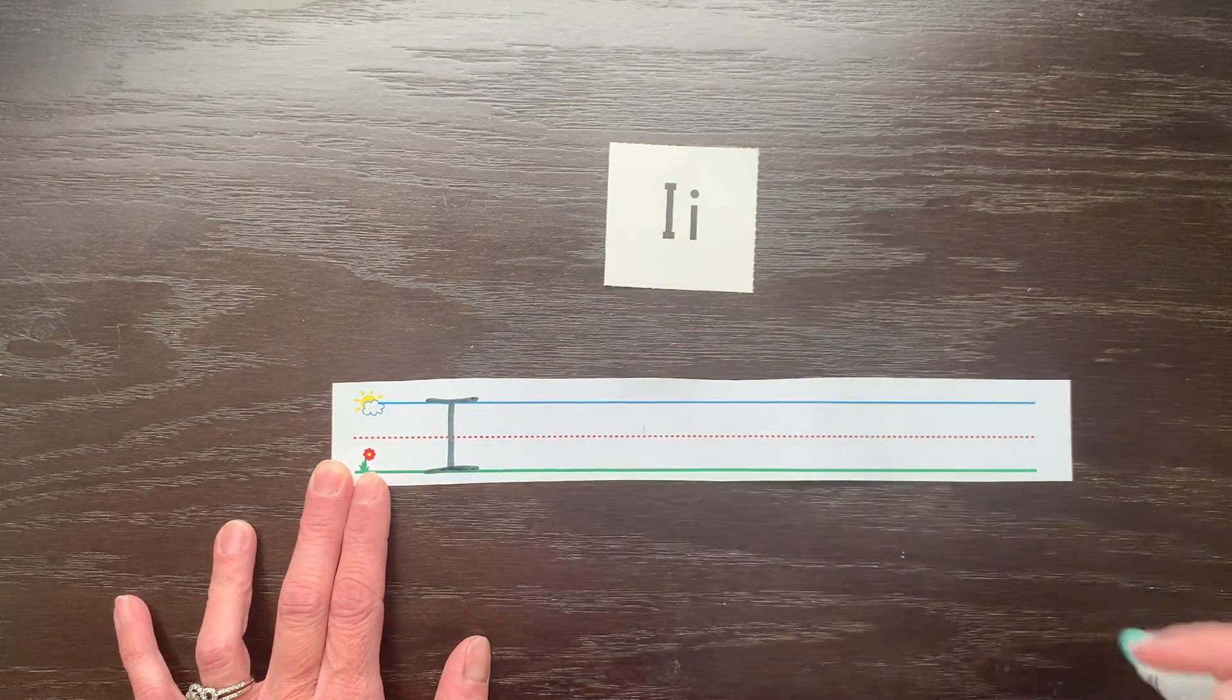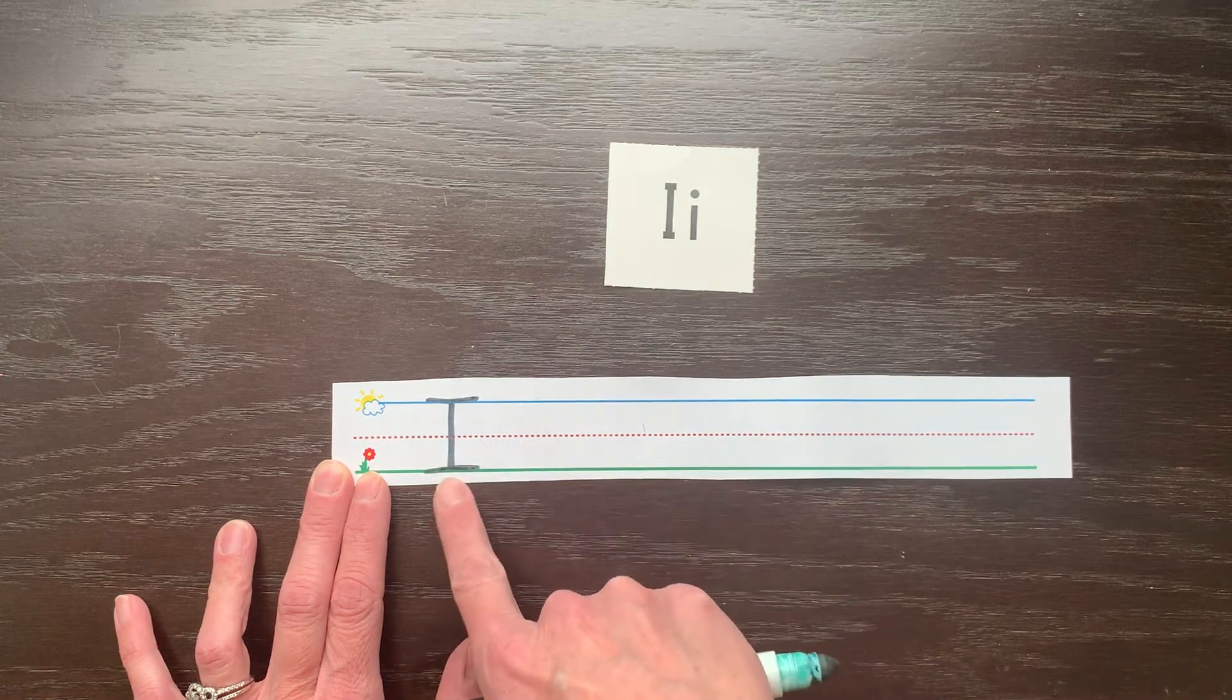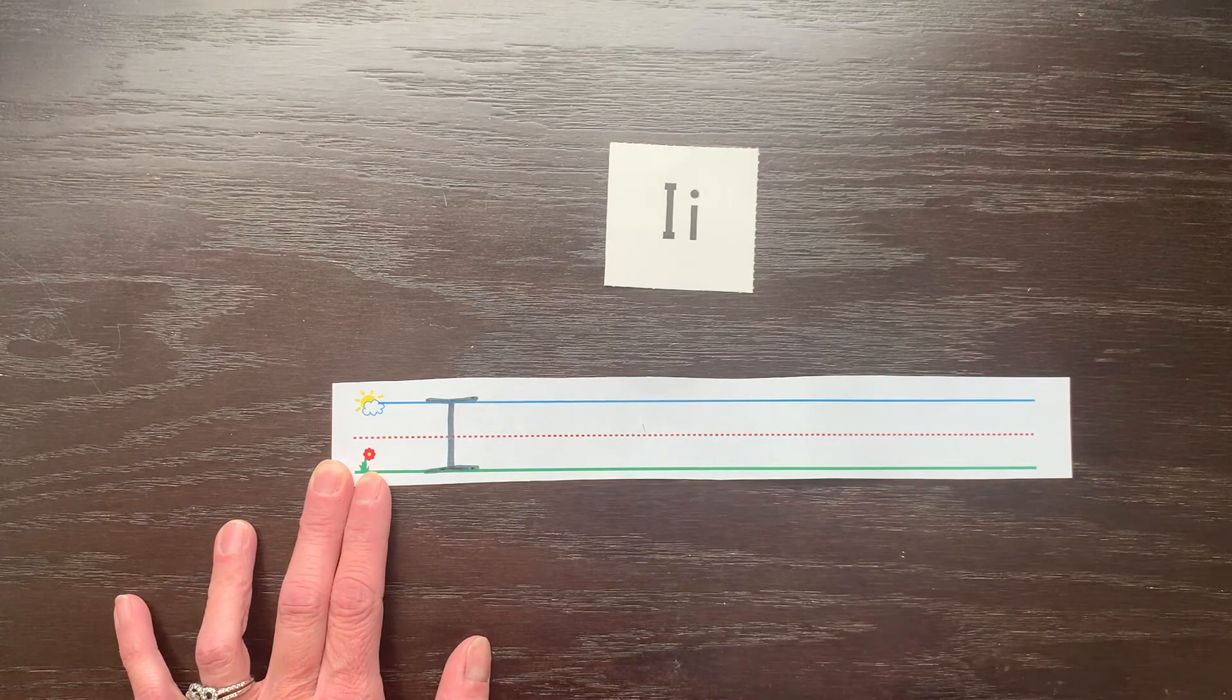So a line across the bottom. The line should go from one side to the other and should be connected to your straight line down.